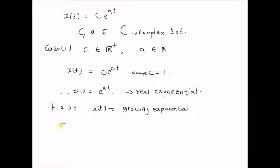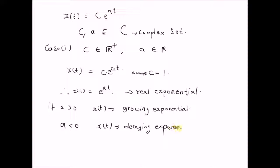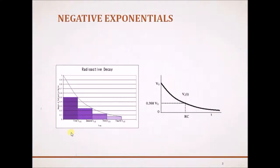In the case where a is less than 0, then x(t) is a decaying exponential, or a negative exponential. Examples of negative or decaying exponentials include: first, the radioactive decay process.